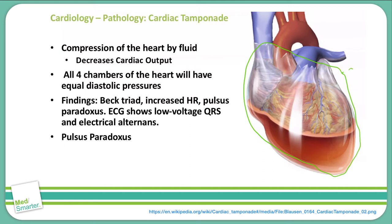Pulsus paradoxus is a decrease in the amplitude of our systolic blood pressure by more than 10 mmHg during inspiration. So if our normal resting systolic blood pressure is 120, upon inspiration someone with cardiac tamponade will have their systolic blood pressure go up to at least 130 or more when they inspire.